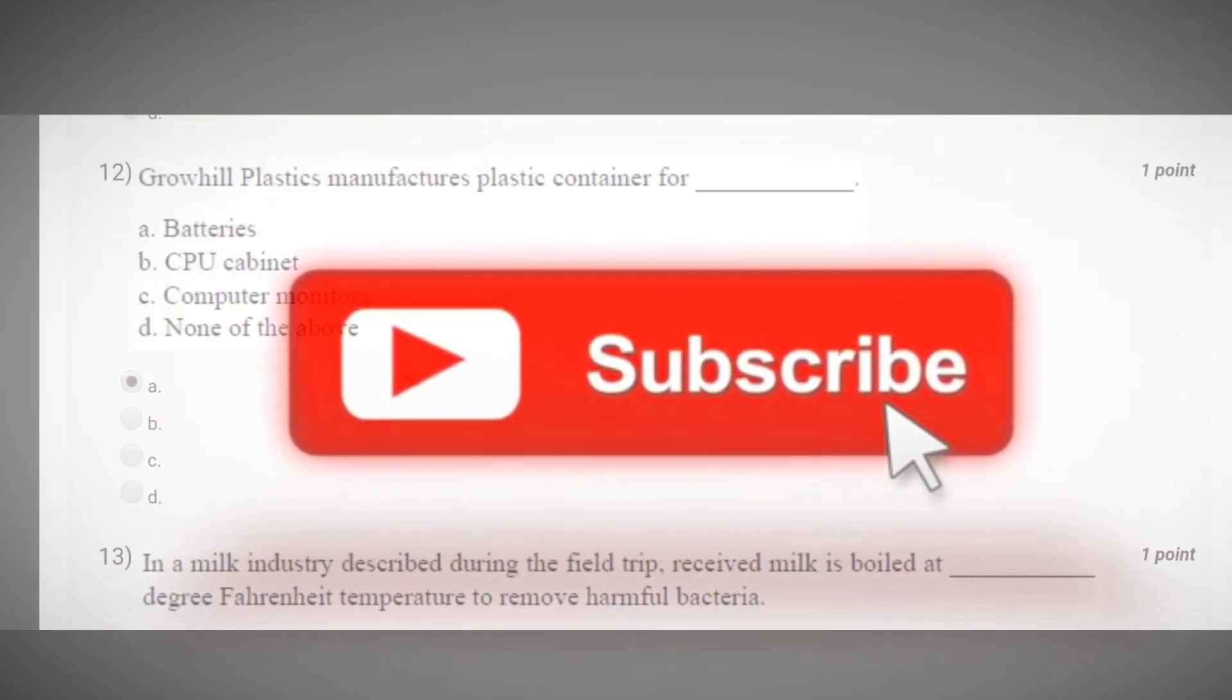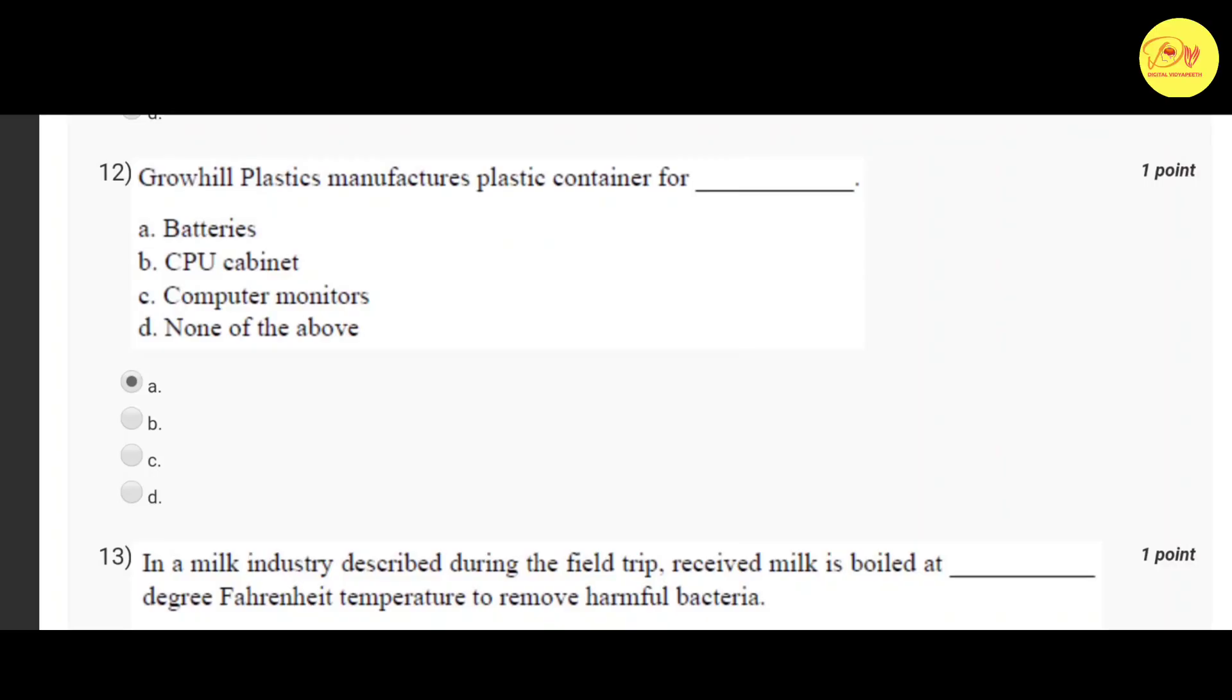Our twelfth question is Grohill Plastics manufactures plastic container. Correct option is A, batteries.